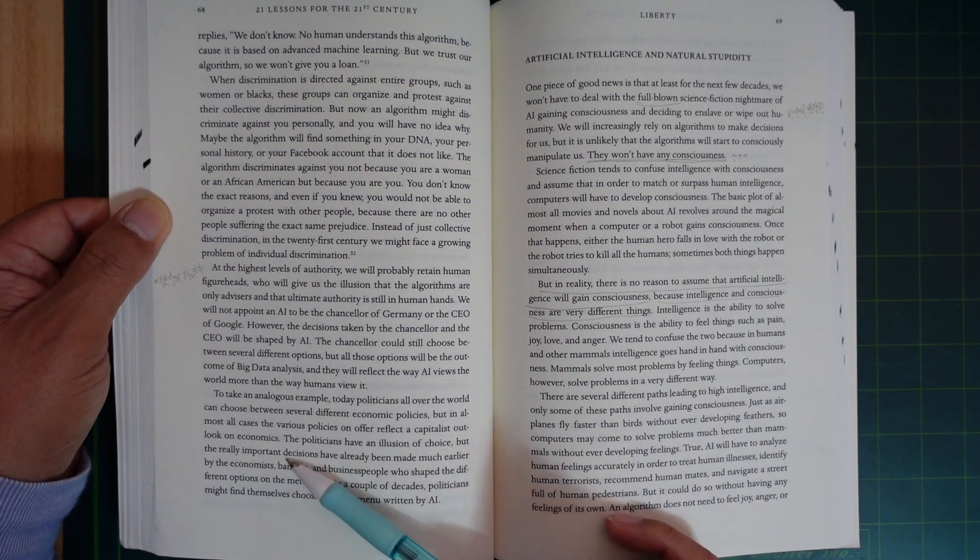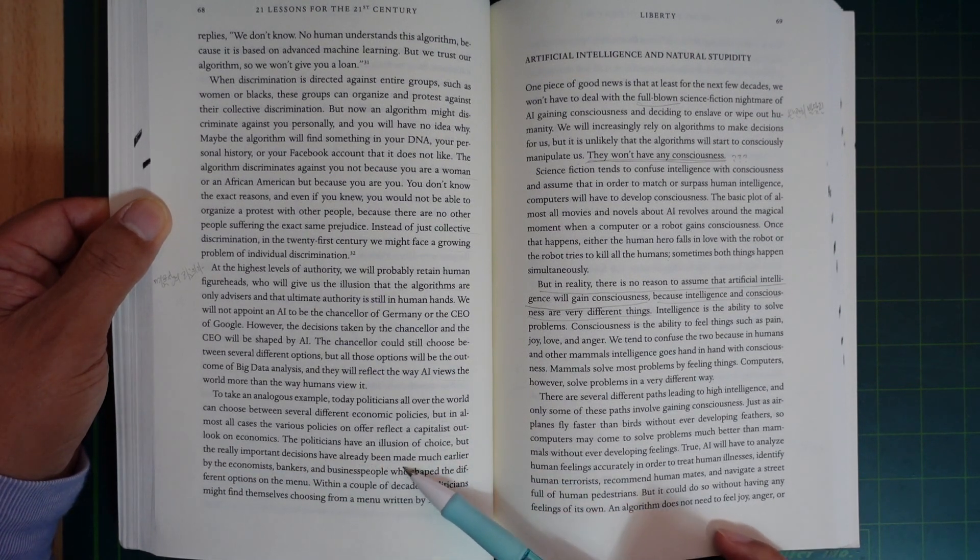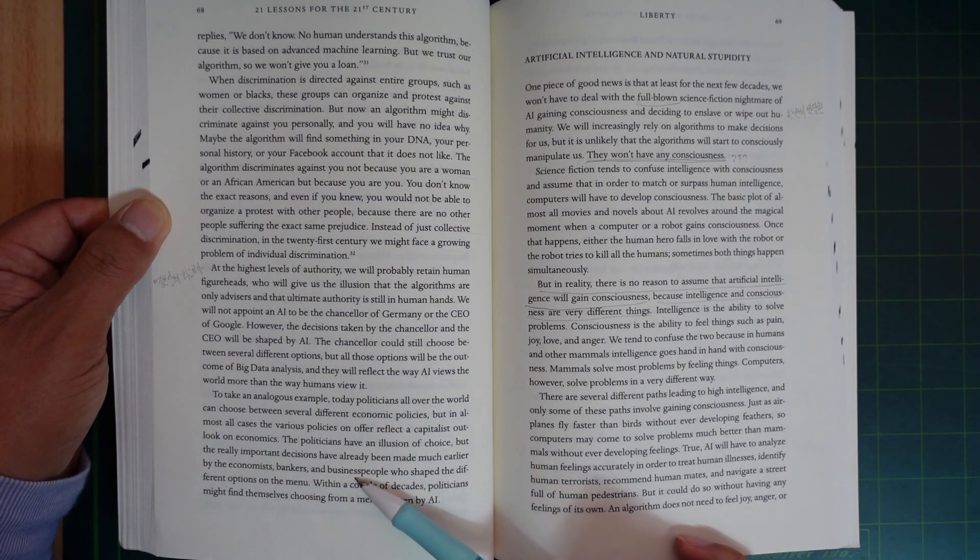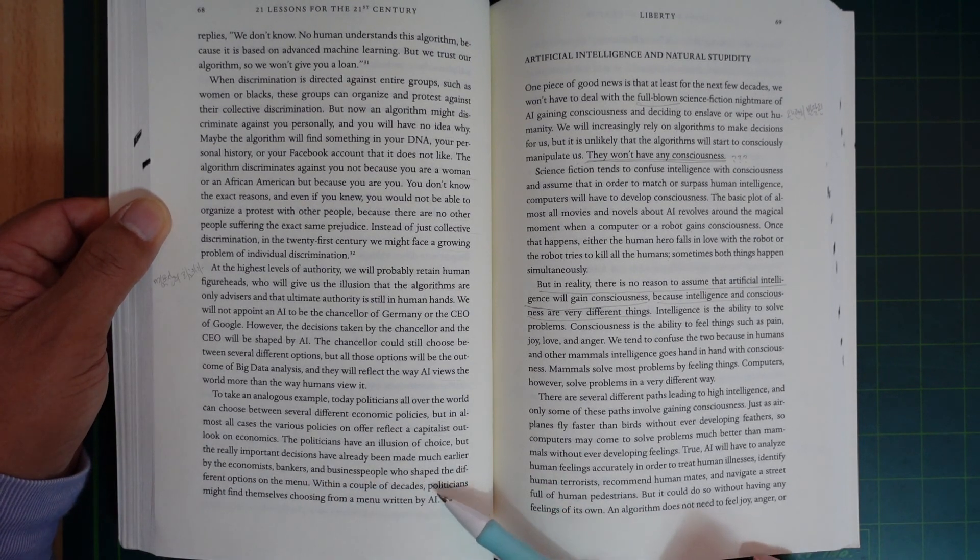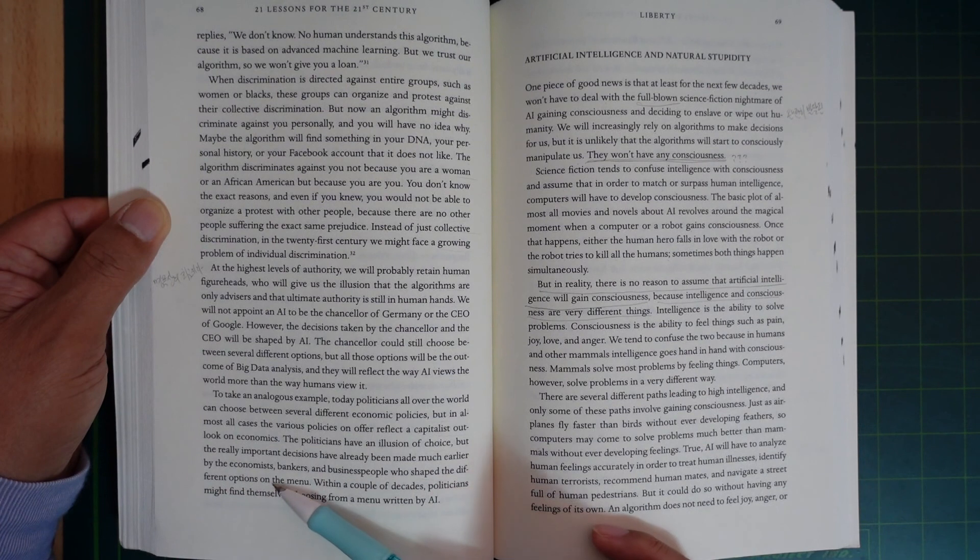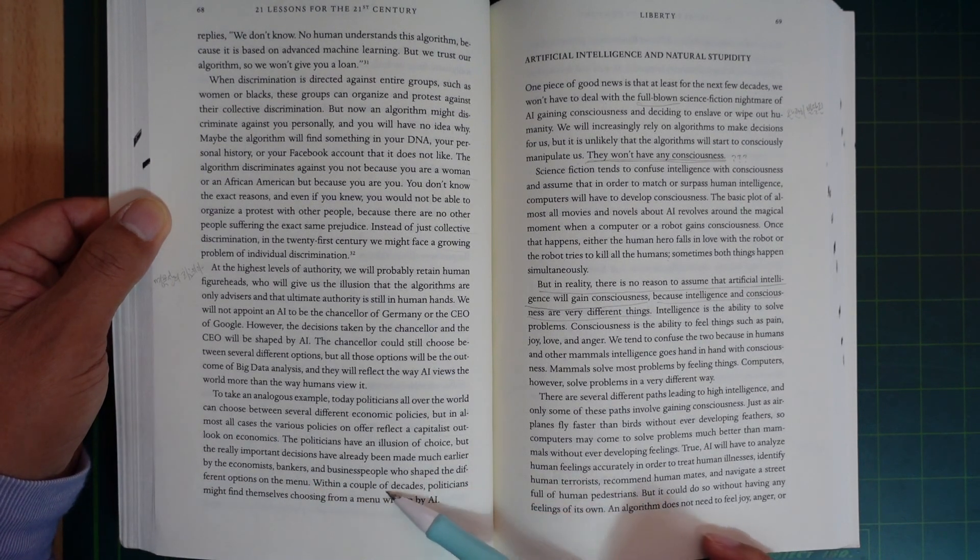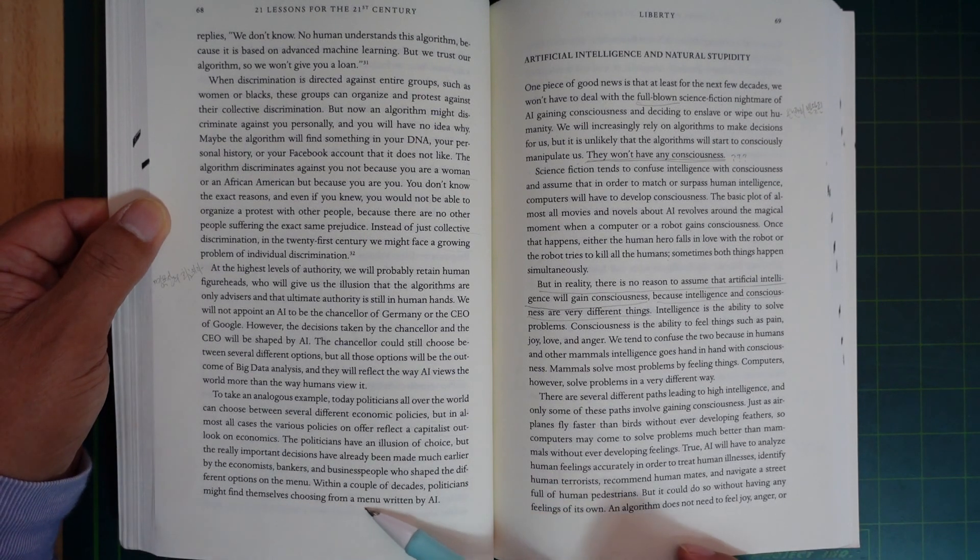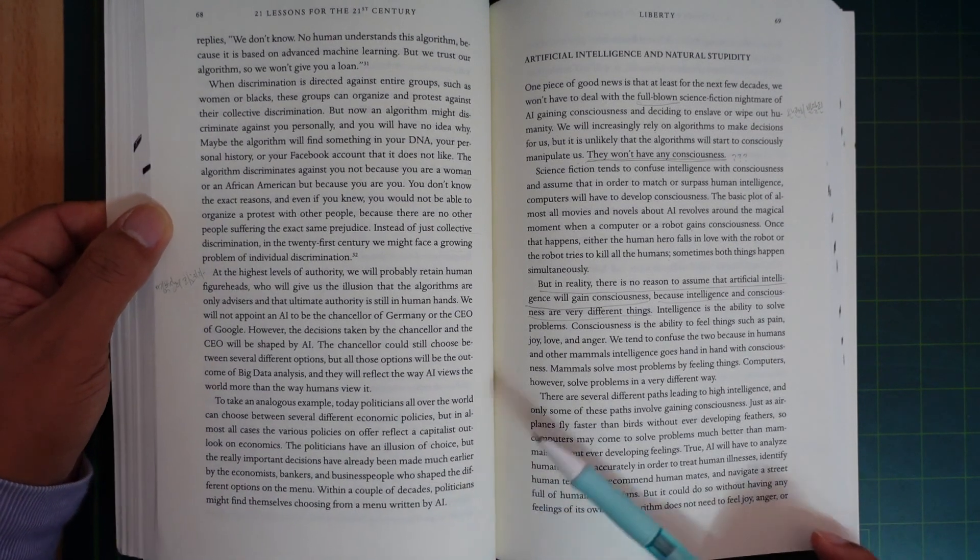The politicians have an illusion of choice, but the really important decisions have already been made much earlier by the economists, bankers, and business people who set the different options on the menu. In a couple of decades, politicians might find themselves choosing from a menu written by AI.